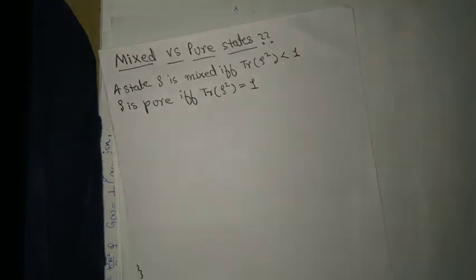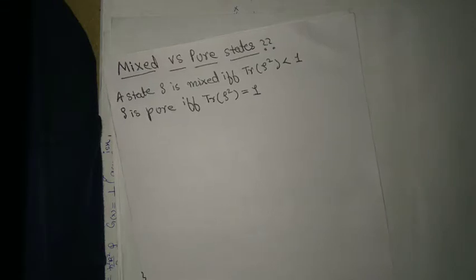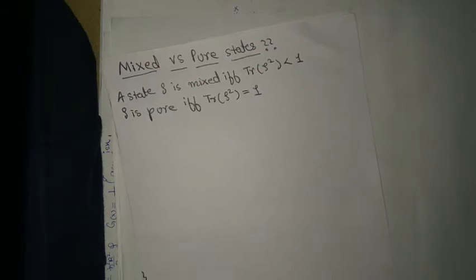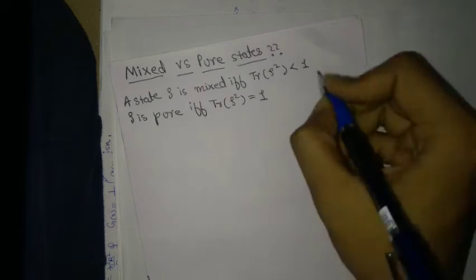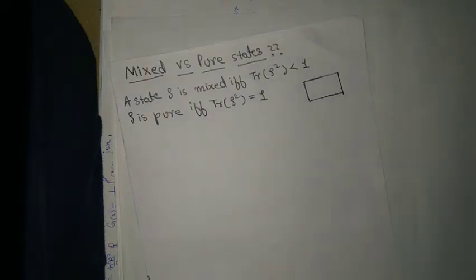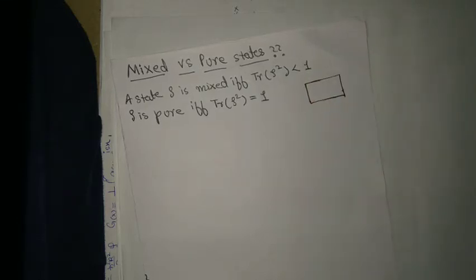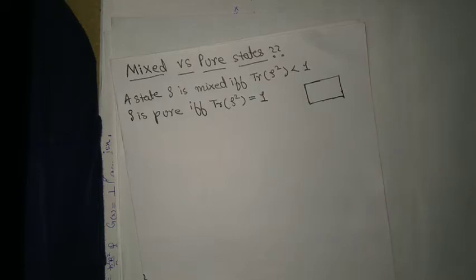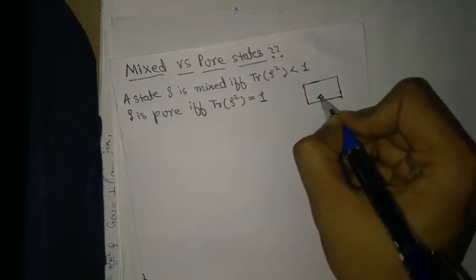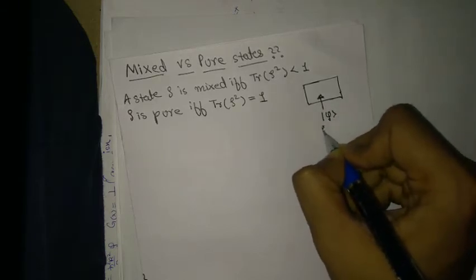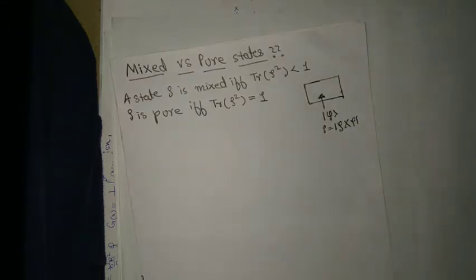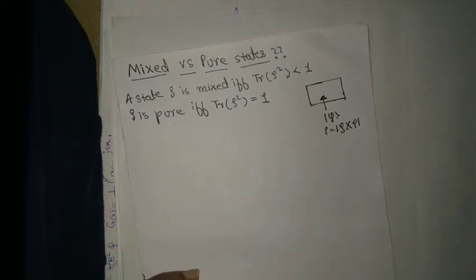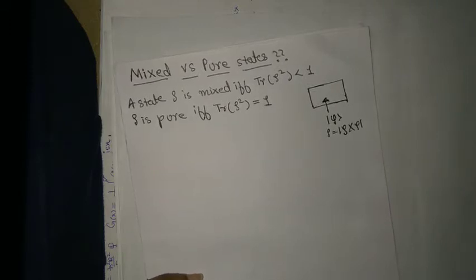Hello friends. This will be a video on mixed states versus pure states — another important concept. Think of the box that we had: an experimentalist gives us some states. If one state |ψ⟩ is given, then ρ = |ψ⟩⟨ψ|. Intuitively it feels like if you have one state, that must be a pure state — and we will see that is in fact true.